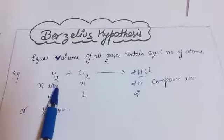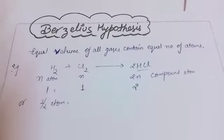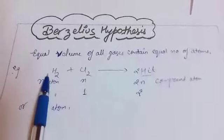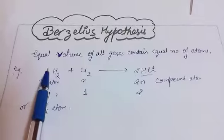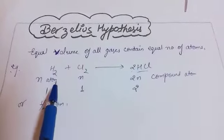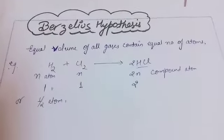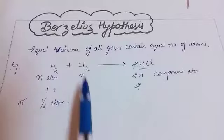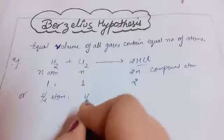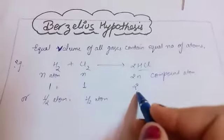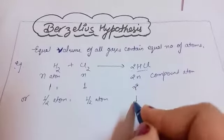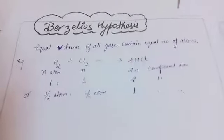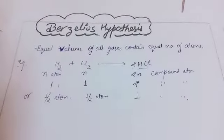H₂ is formed by the combination of two hydrogen atoms. But since we have considered equal volume of all gases contain equal number of atoms, if volume is 1 for H₂ then the atom count is also 1. When you calculate for a single hydrogen, it becomes half an atom. Similarly for chlorine it also becomes half an atom. Half an atom is not possible — that's why Berzelius hypothesis is not valid.